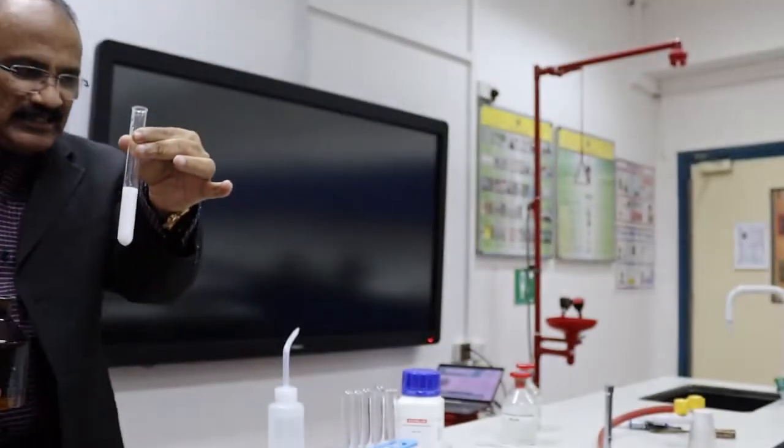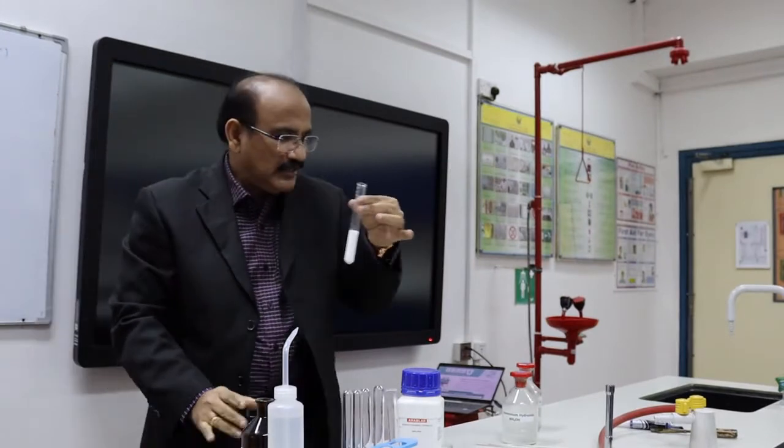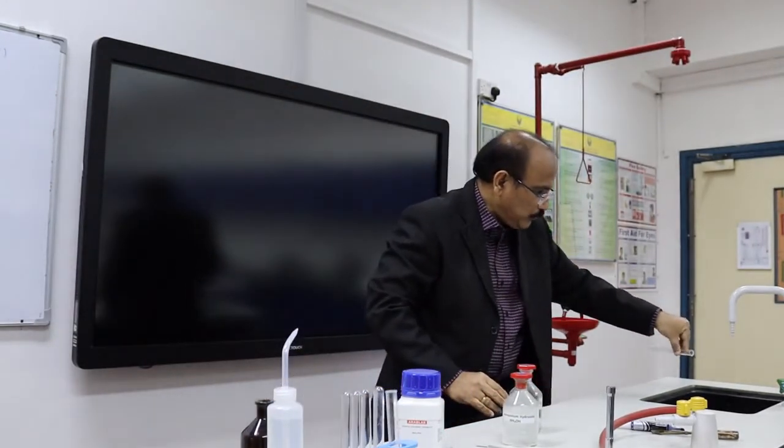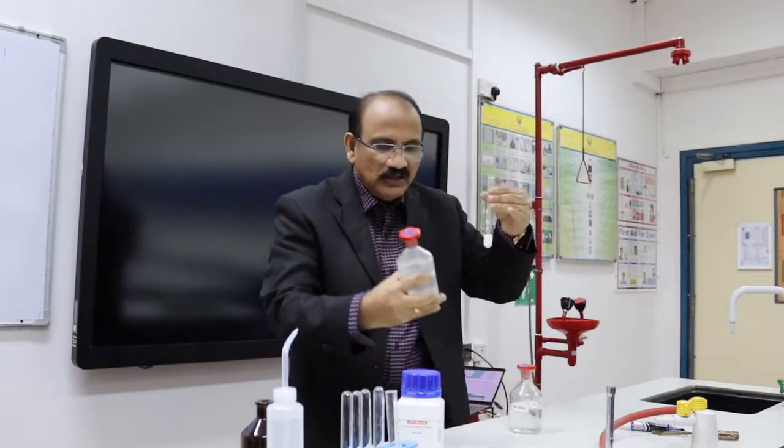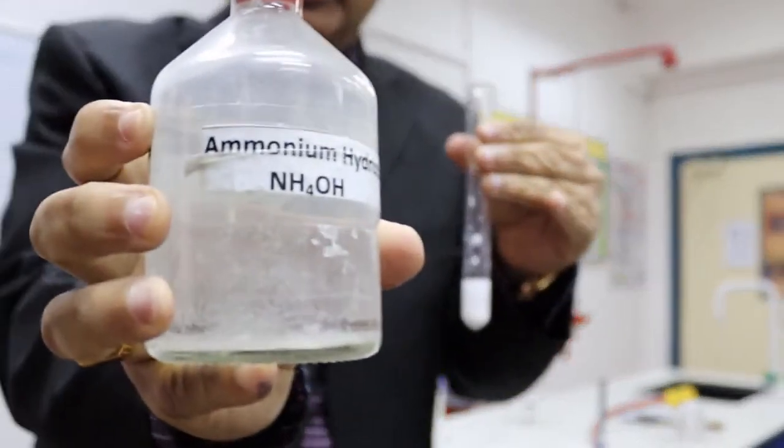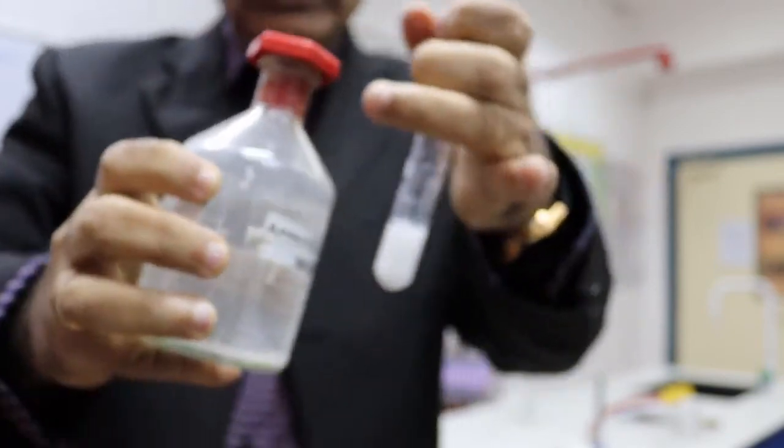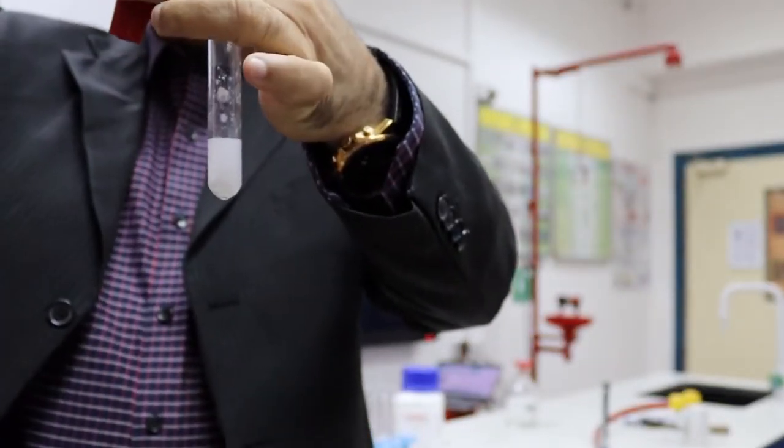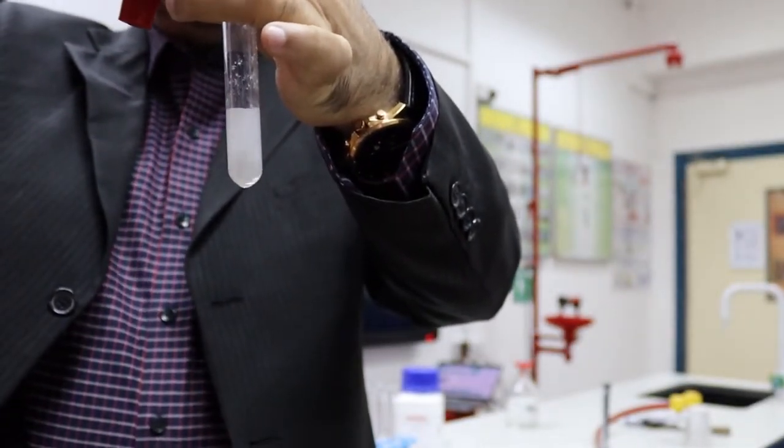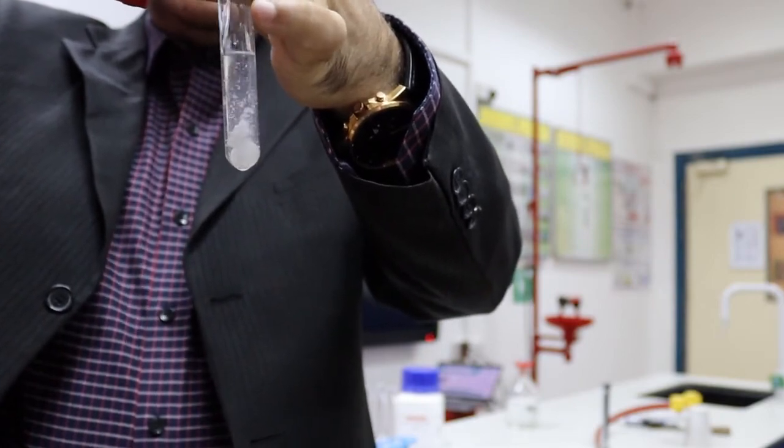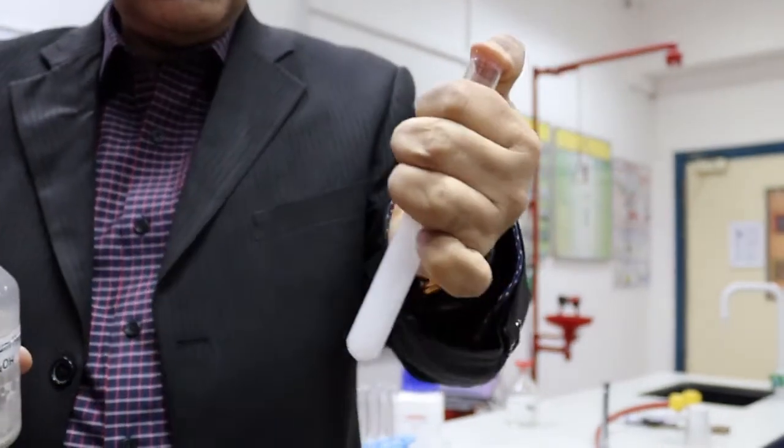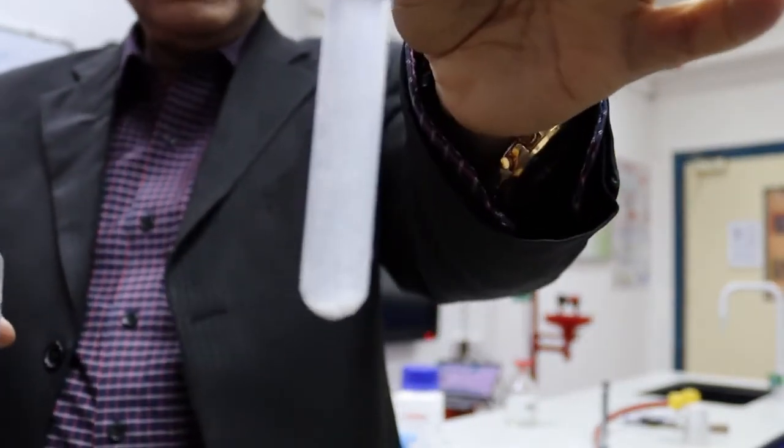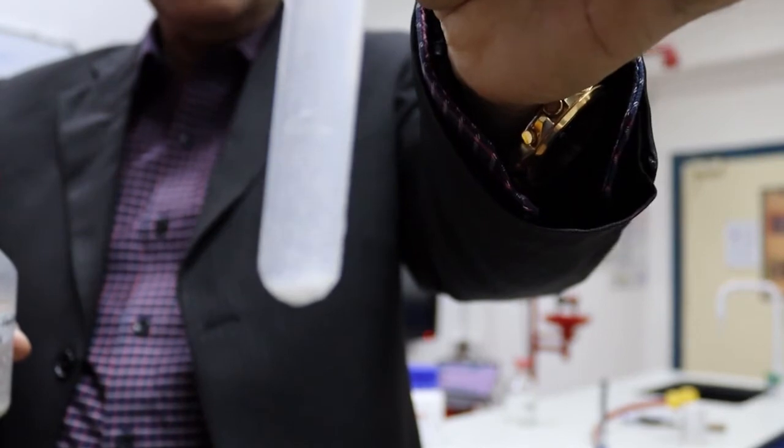So that is the confirmatory test. So what we will do, we will pour half of the precipitate, and then into that we have to add ammonium hydroxide. Ammonium hydroxide I am going to add. So let us see, ammonium hydroxide is added. It was a curdy precipitate. Now just shake it and see, the precipitate is getting gradually dissolved.